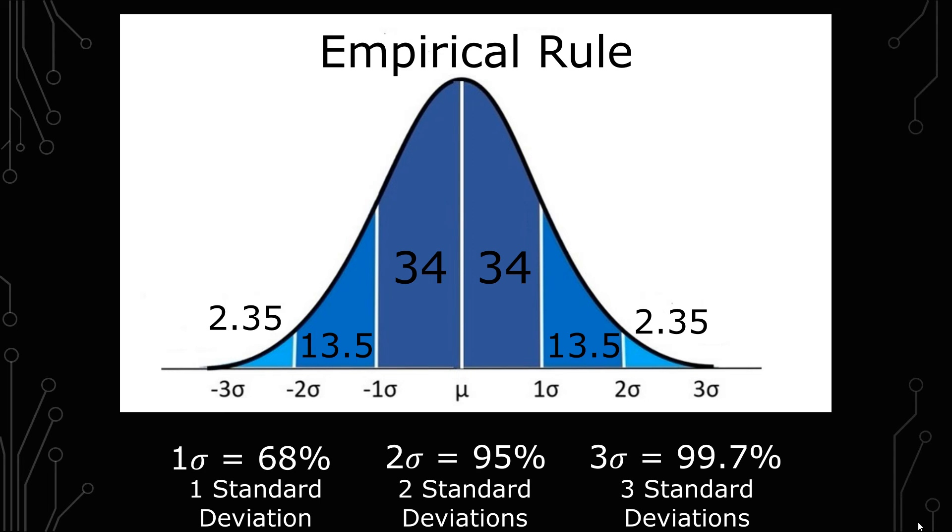So for example, the ACT score, if you've taken the ACT, is something that is often given in a percentile understanding. So you'll get your number for your score, but you'll also be given a percentile. And that percentile is a normal distribution application, and it uses the standard deviation.